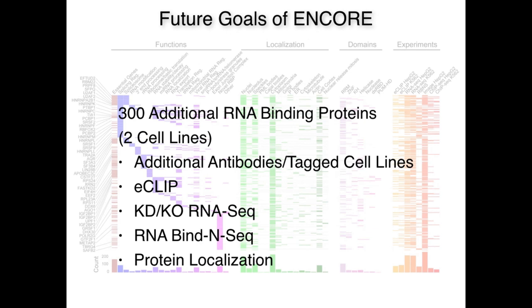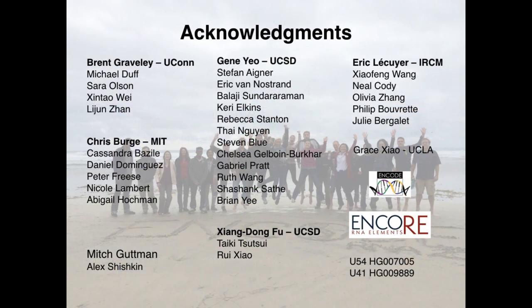Our future goals are to continue this work. We are currently funded under a U41 consortium community resource project and are affiliated members of ENCODE. We are working to generate data for 300 additional RNA binding proteins from the two cell lines using the same types of experiments, and we hope to complete and release that data to the public within the next year or two. I'd like to acknowledge the people involved: the labs of Jin Yao, Eric Bacoyer, Chris Burge, Zhen Dong Fu, and Grace Yao's lab from UCLA. Thank you to NHGRI for funding this work, and thank you for your attention.